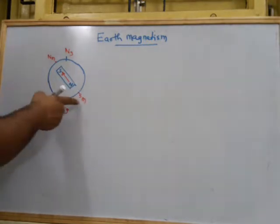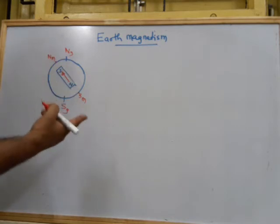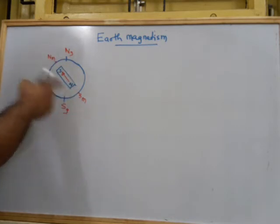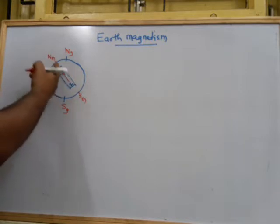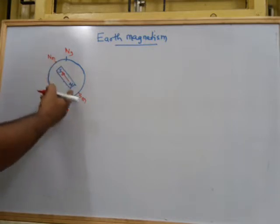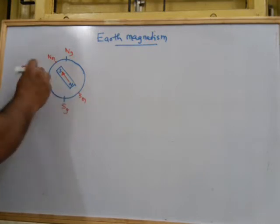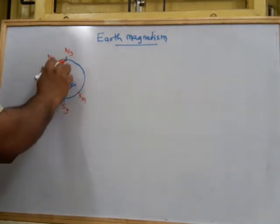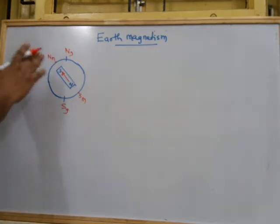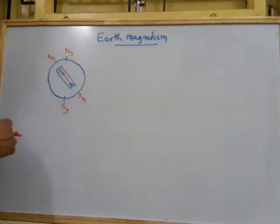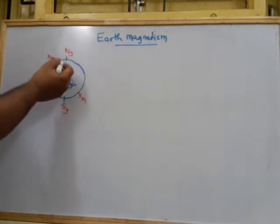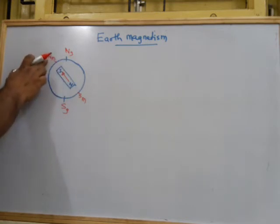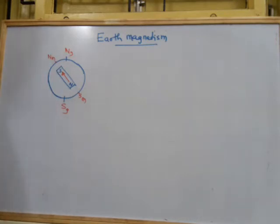These two points that the dipole points to are recognized as NM (magnetic north) and SM (magnetic south). So the magnetic dipole points directly in the direction of magnetic north and magnetic south. The dipole does not point exactly to geographical north — the magnetic north is slightly deflected at a small angle from geographical north.